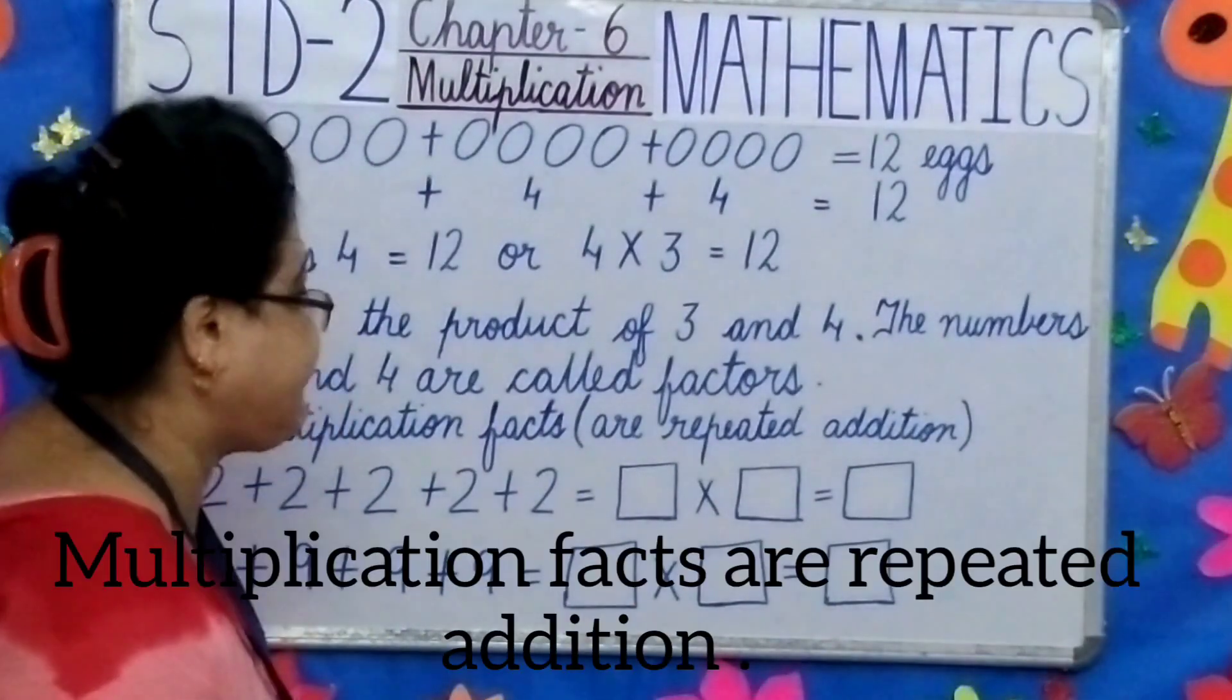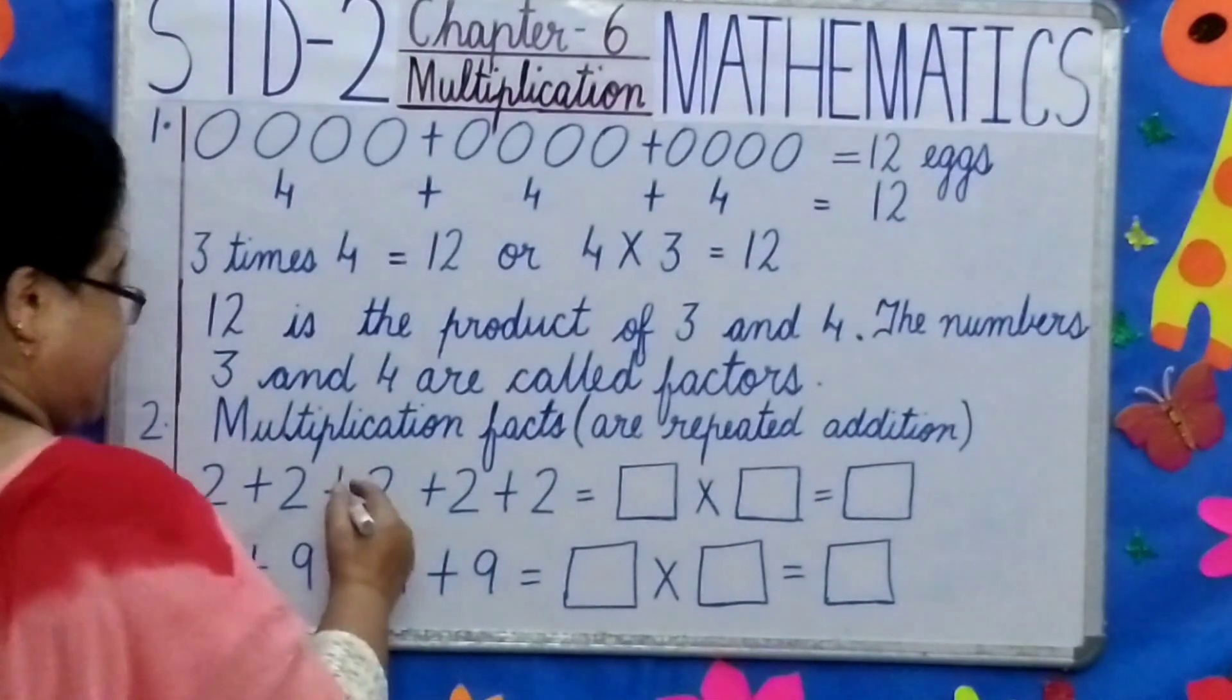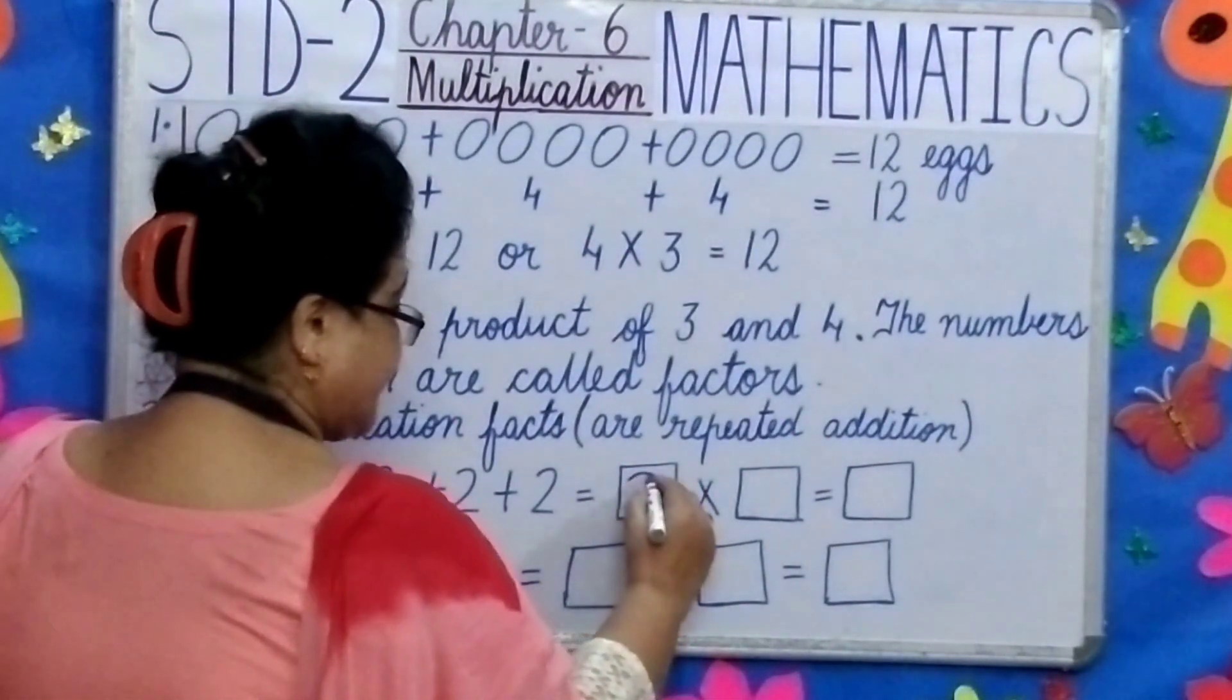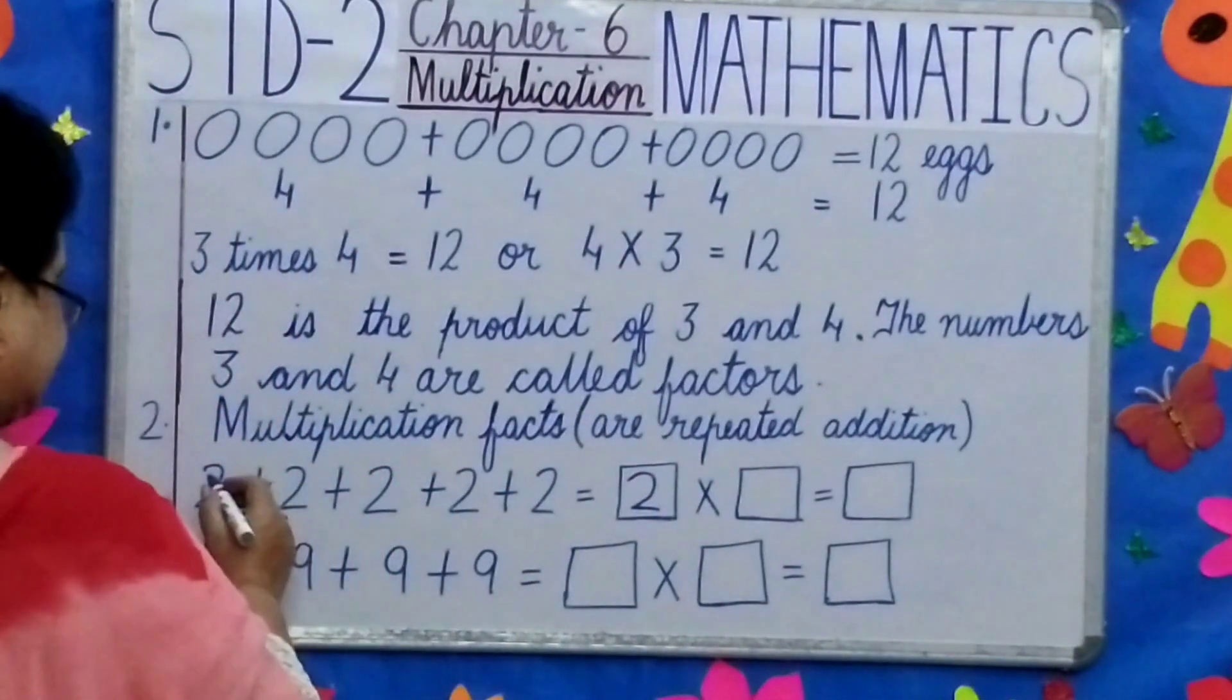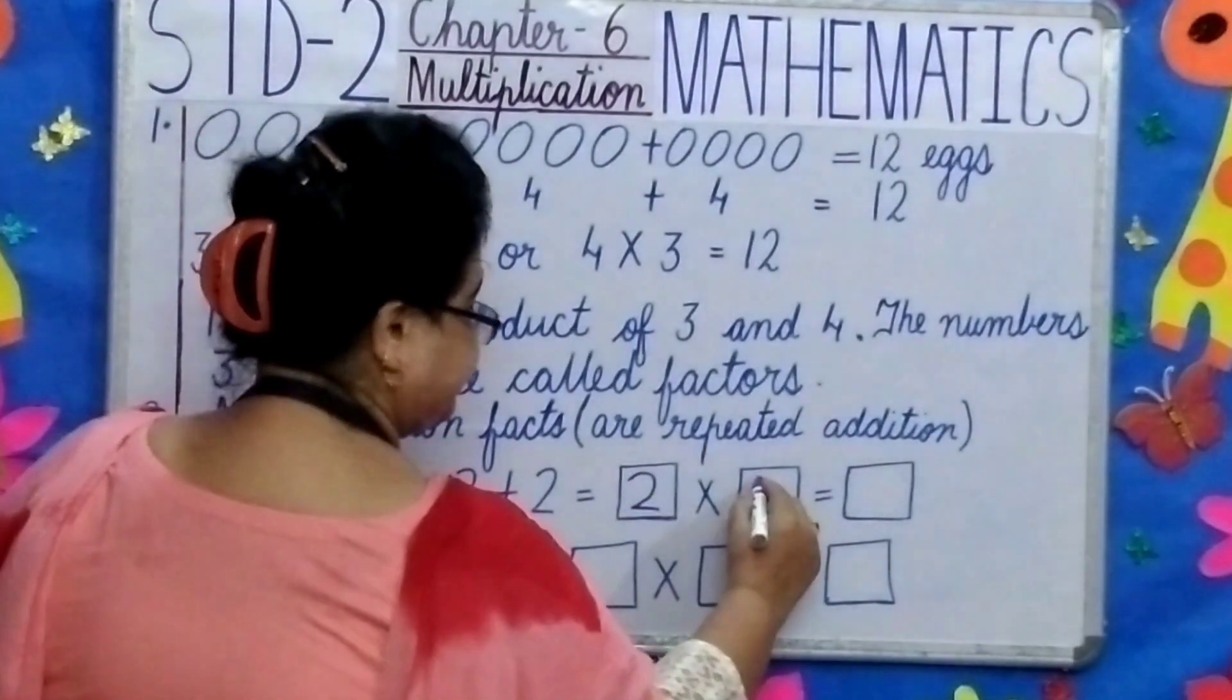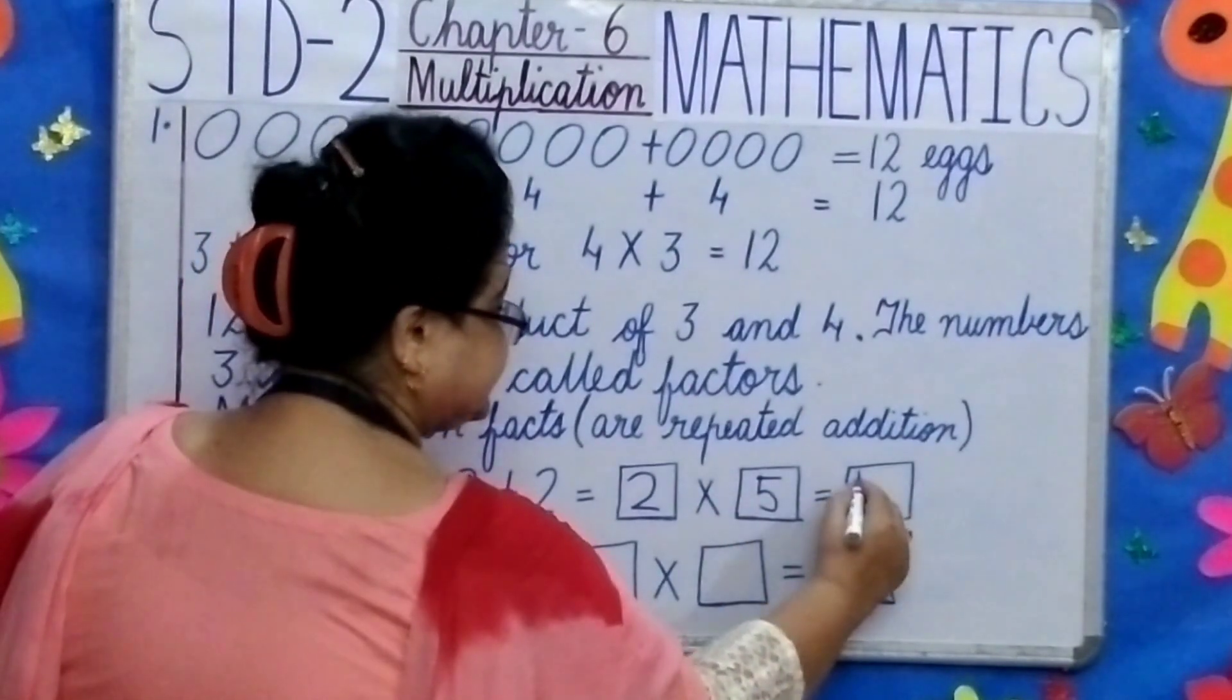Multiplication facts are repeated addition. Children, what number is this? 2. So in the first box we are going to write 2. Let's count how many times? 1, 2, 3, 4, 5. We will put 5 over here. 2 fives are 10.